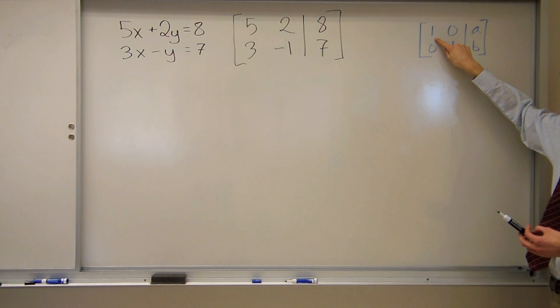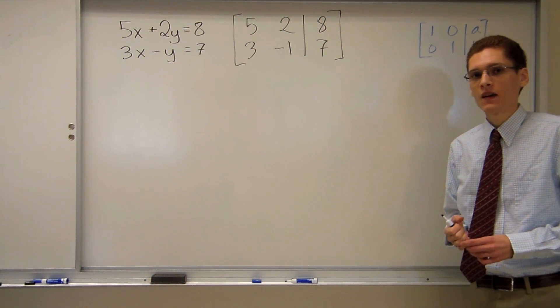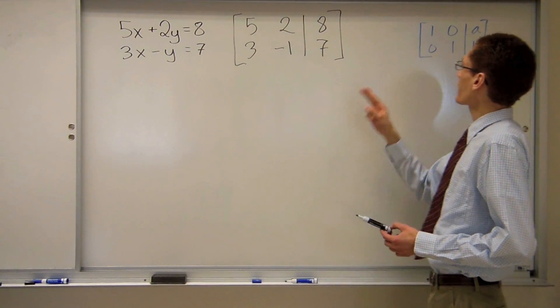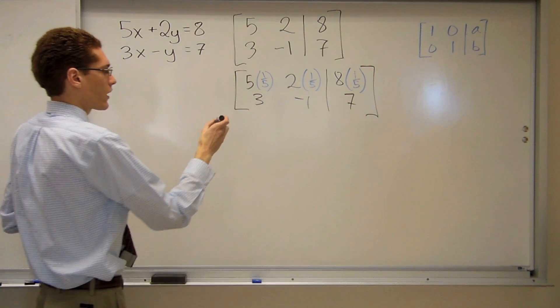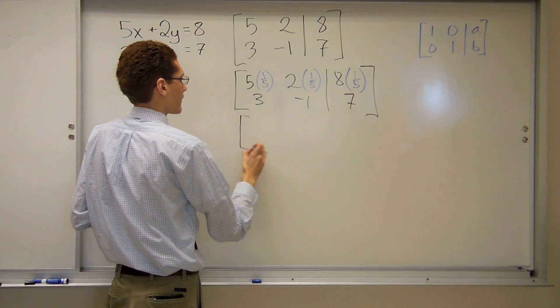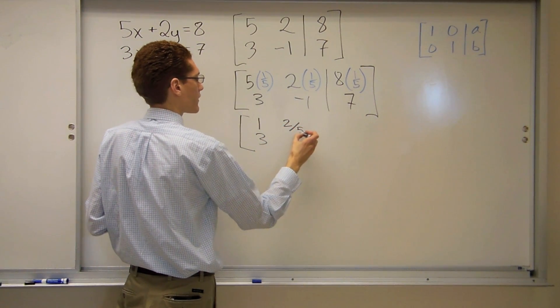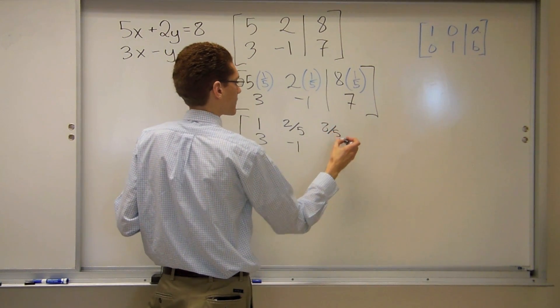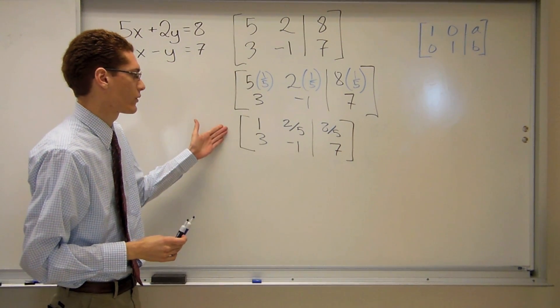I'm going to start with trying to get the 5 to be 1 in this first place here. Now I know I can multiply by any number other than 0. So if I multiply 5 by 1 fifth, I can get it to be 1. So when I multiply those out, 5 times 1 fifth is 1, 2 times 1 fifth is 2 fifths, and 8 times 1 fifth is 8 fifths. So I have this augmented matrix.